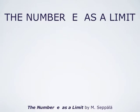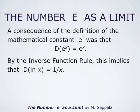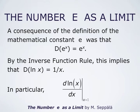An immediate consequence of this geometric definition of the mathematical constant e was that the derivative of the function e to the x is e to the x itself. And by the inverse function rule, this implies that the derivative of the inverse function of e to the x is just 1 over x — that is, the derivative of the natural logarithm of x is 1 over x. Here we must assume that x is positive.